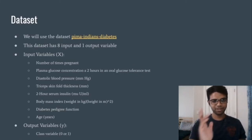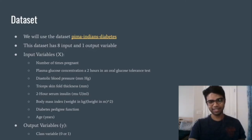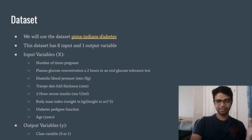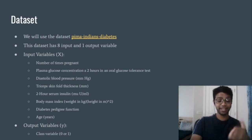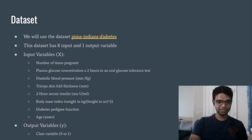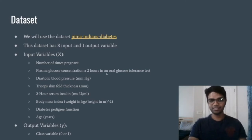Now let's talk about the code. First, the dataset: we used the PIMA Indians Diabetes dataset. I will give its link in the description. This dataset has eight feature vectors — eight inputs — and one target vector. The input variables include pregnancy times and so on. The output value is either zero or one, two classes.